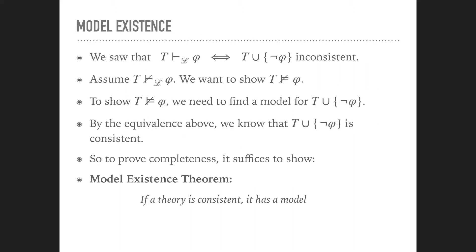We will prove this direction of the completeness theorem in form of the model existence theorem. So what does this say? Well, we saw that T proves φ formally if and only if the set T union not φ is inconsistent. So if I add not φ to the theory T, or rather the universal closure of not φ to T, then this becomes inconsistent. Assume now T does not prove φ. We want to show then, because that's the direction of the completeness theorem, we want to prove by contrapositive.